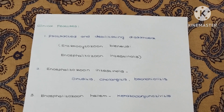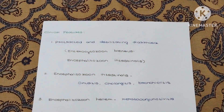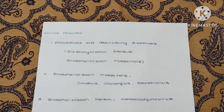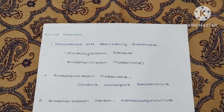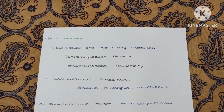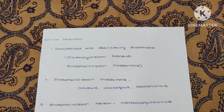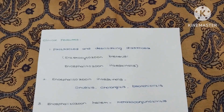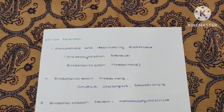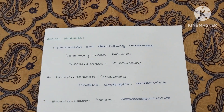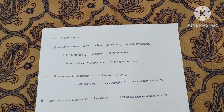For clinical features, it usually causes protracted and debilitating diarrhea, mainly caused by Enterocytozoon bieneusi and Encephalitozoon intestinalis. These are some of the genera present in Microsporidia.